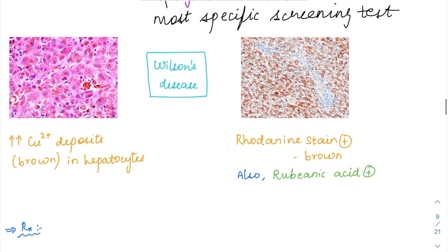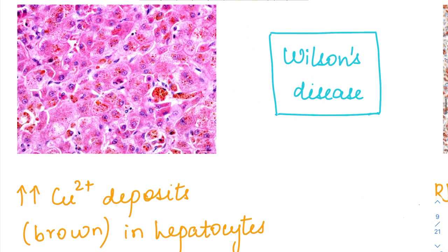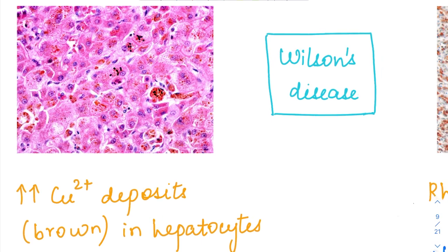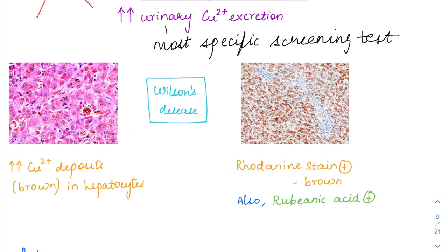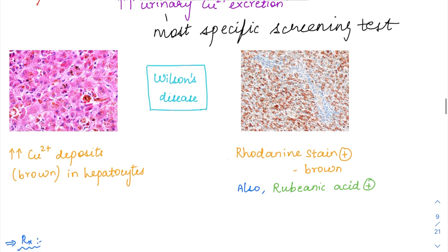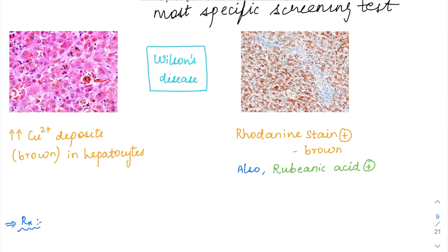On microscopy of liver biopsy, there will be copper deposition in the hepatocytes, appearing as brownish granular pigment. These brownish granular pigments inside the hepatocytes are copper deposits. You might confuse this with bilirubin, hemochromatosis, or even lipofuscin, which all have some brownish tinge. You'll need to look at the history properly to determine what kind of pigment deposition is present.